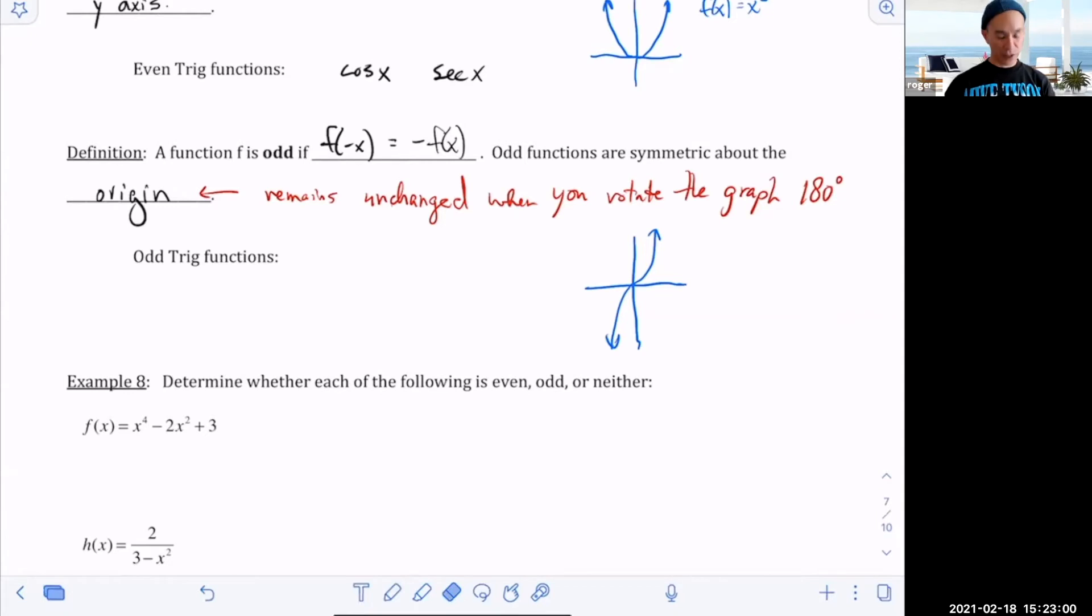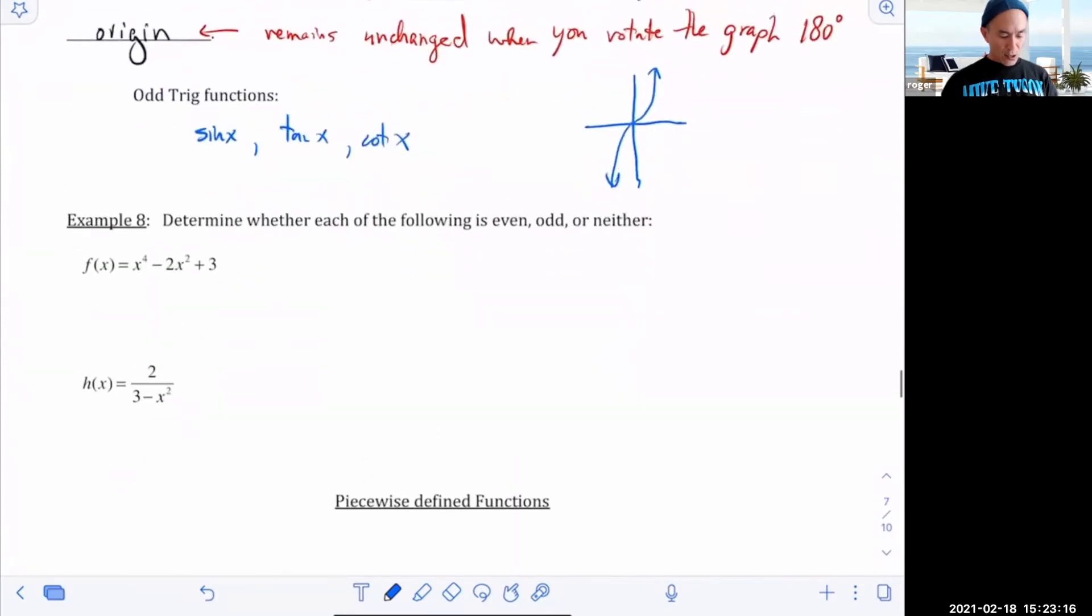So the odd trig functions are sine of x, tangent of x, and cotangent of x. These are all odd. So let's look at this example and determine whether each of these are even, odd, or neither.